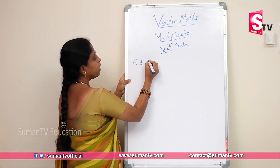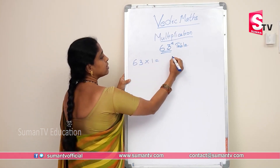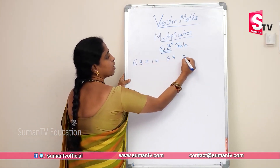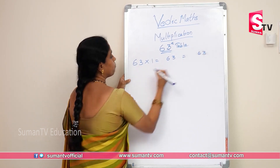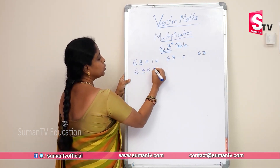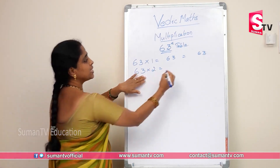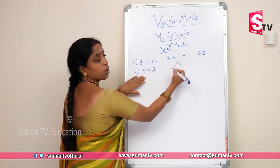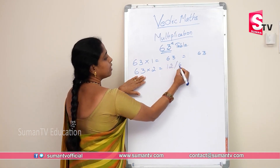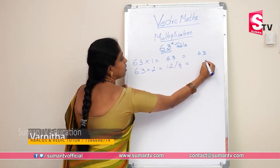63 × 1: one three is 3, one six is 6. So 63 × 1 is 63. Now 63 × 2: two threes are 6, two sixes are 12. There is one digit to carry, so write it: result is 126.